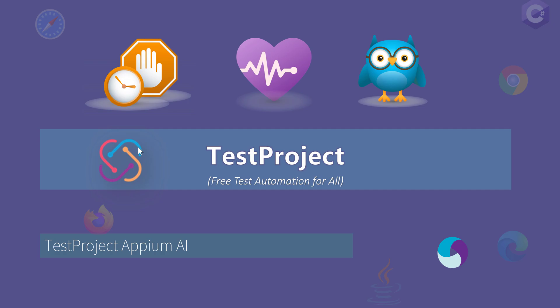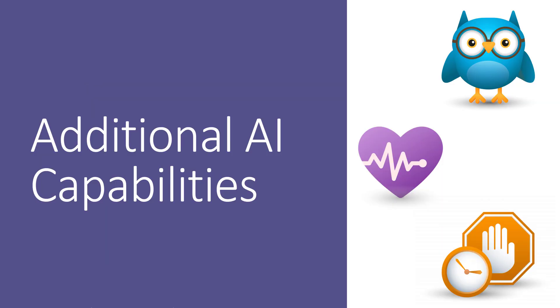Hi guys, my name is Karthik and I am from userautomation.com. Welcome to another video in the test project video series. In this video we're talking about test project's new Appium AI. This is another breakthrough from the test project team, releasing artificial intelligence support in mobile app automation. Test project already supports mobile platforms and its AI capabilities — self-healing, adaptive wait, and automation assistant — are available for both web and mobile app.